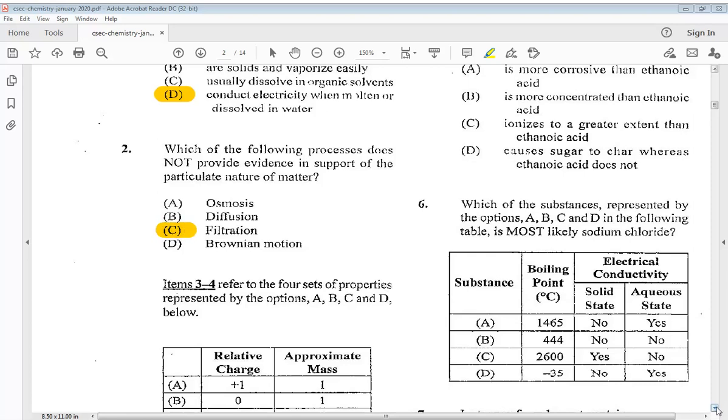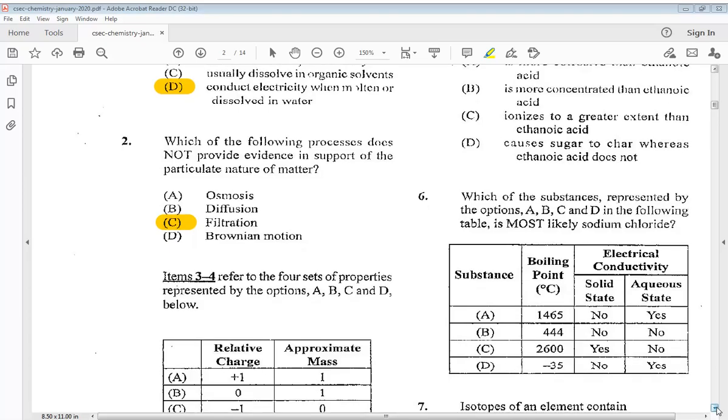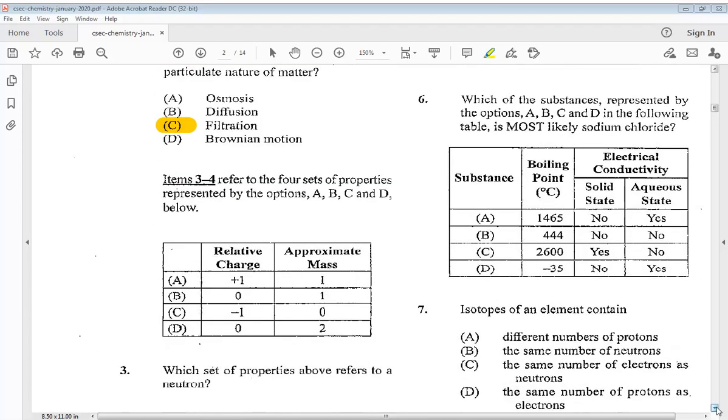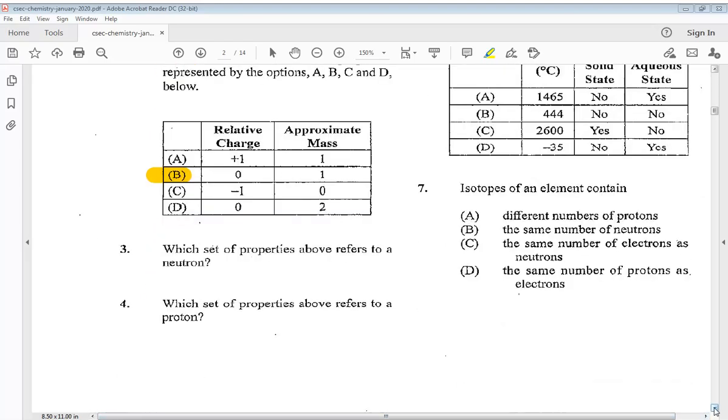Items three to four refer to the four sets of properties represented by the options A, B, C and D below. Which set of properties above refers to a neutron? So we know it is B. B for three. Which set of properties above refers to a proton? So we know it is A for four.